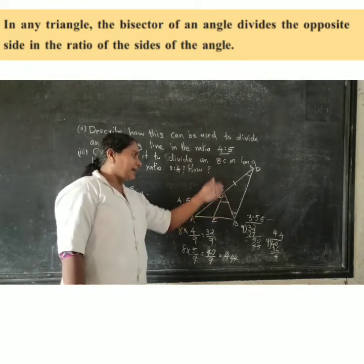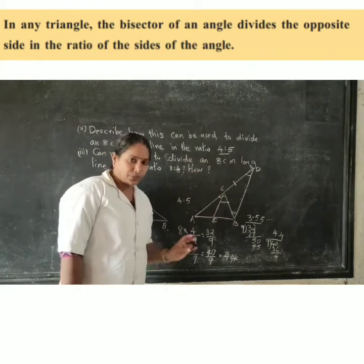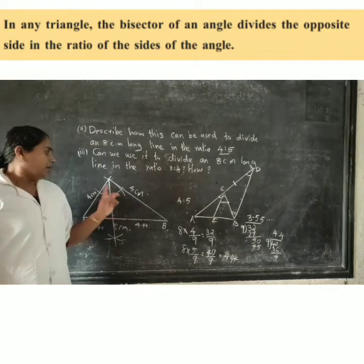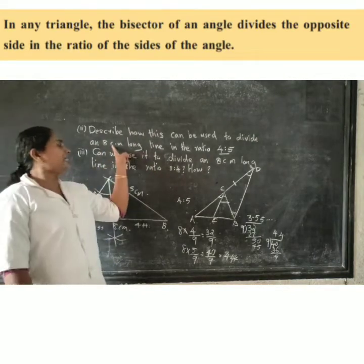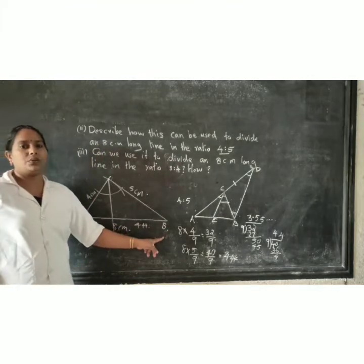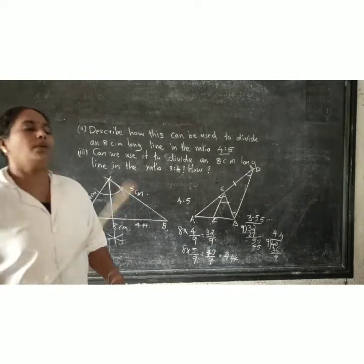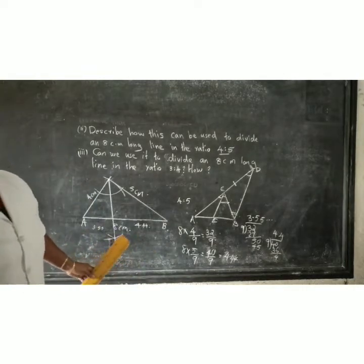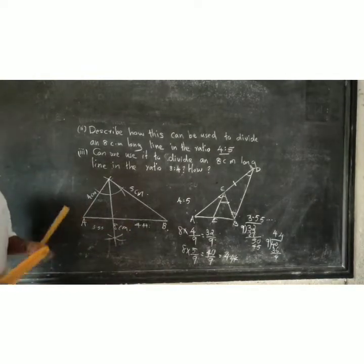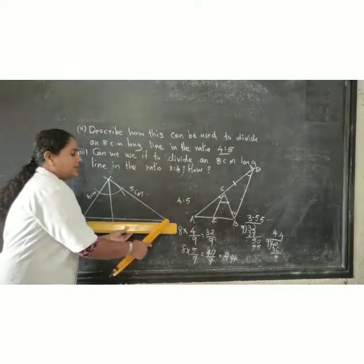Using the angle bisector idea. First step, draw an 8 cm long line. Using scale, draw a line 8 cm. Mark A and B.